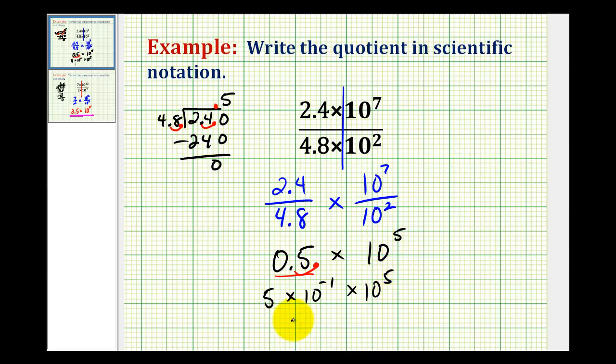So our final answer is going to be five times ten to the negative one plus five would be positive four. So we have five times ten to the fourth as our quotient in the correct form for scientific notation.